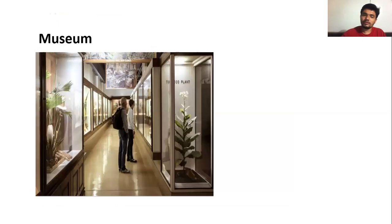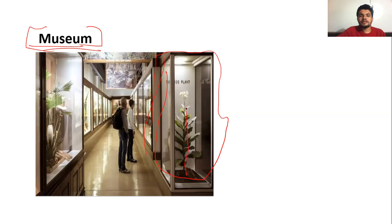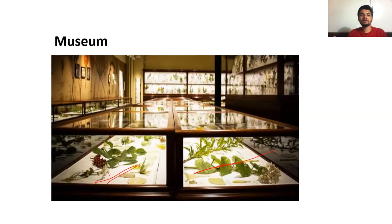Educational institutes also have museums in which dead plants and animals are conserved in chambers or boxes. Here you can see in this box a specimen that is conserved — plants and animals are preserved in laboratories or museums for taxonomical studies. Here is a beautiful image of a museum in which plants are conserved.